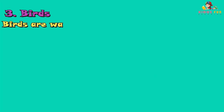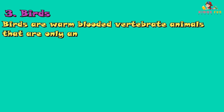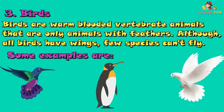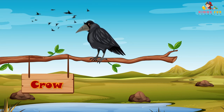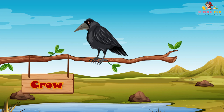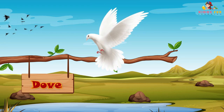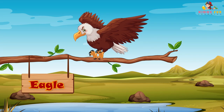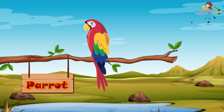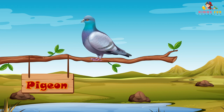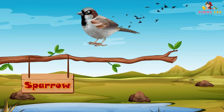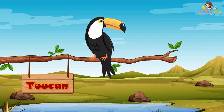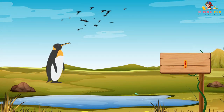Birds are warm-blooded vertebrate animals that are the only animals with feathers. Although all birds have wings, few species can fly. Some examples are crow, dove, eagle, parrot, pigeon, sparrow, toucan, and penguin.